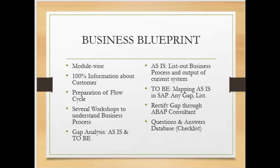The Business Blueprint defines how the project needs to be implemented. To understand this, you need two parts: AS-IS and TO-BE. AS-IS means what currently exists — how the business is currently functioning. To gather this information, consultants go to the business, conduct workshops and meetings, and list out the current business processes and systems.